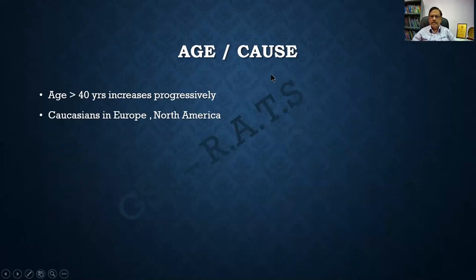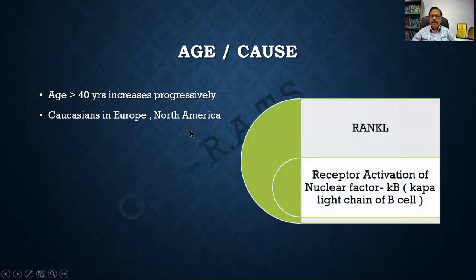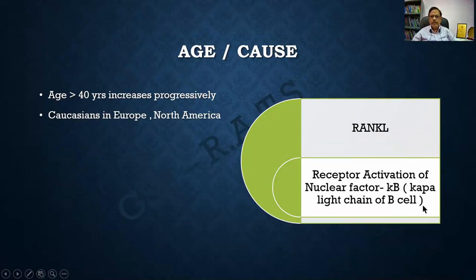In all these viral causes, microcylindric inclusions can be found in the lesion. Regarding age, the disease is uncommon below 40 years, more common after 50 to 60 years, and it grows progressively. The distribution is common in Europe and America, uncommon in Asia. One important thing to remember is RANKL — Receptor Activation of Nuclear Factor Kappa light chain of the B cell — which is important and can be an MCQ.